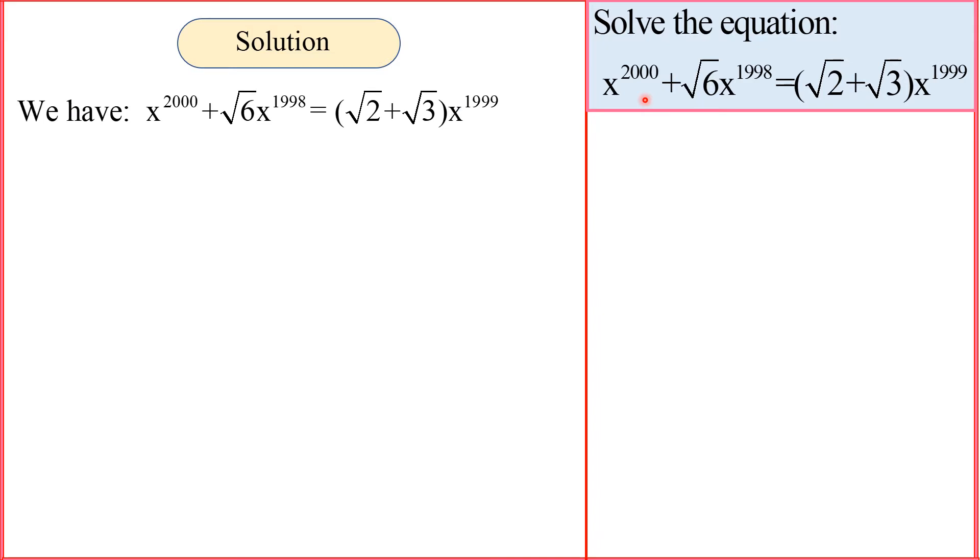So let me write the problem one more time. Technically in this part, you see something here. So I moved this side, the second side into the first side. So in here, you see in front of that is a plus sign, but naturally we don't write it. When it moved to the opposite side, you have minus, or possibly you can minus both sides with square root of 2 plus square root of 3x to the power of 1999.